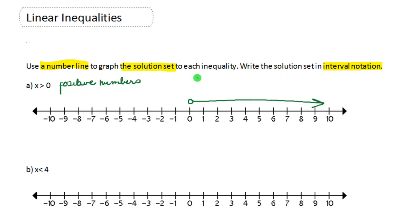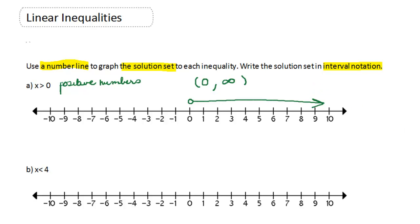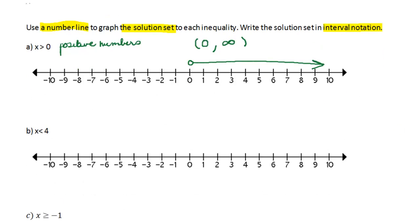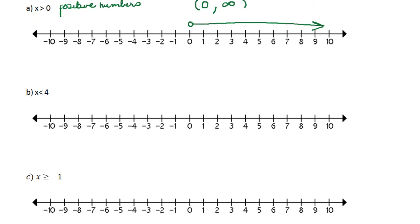We can't get to a highest positive number — these will go on forever. So to write the solution set in interval notation, we use parentheses because we have an open boundary point. We put zero on the left, that's our smallest point in our solution set. And because we don't have a highest number, we use the symbol called infinity, which is like a sideways eight. And that's our interval notation.